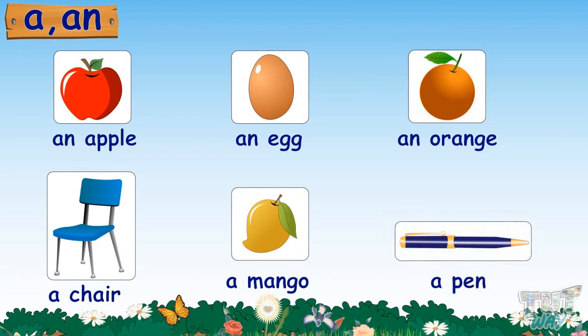There is a little confusion about why there is 'a' before certain names and 'an' before certain names. Let's find a solution to this confusion.